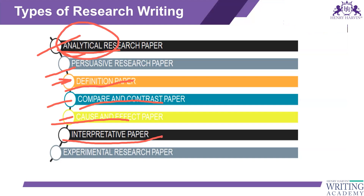Then we have the interpretative paper, also called the qualitative paper. In this, you have a situation already going on — like people's behavior — and you try to understand where it is coming from. For example, in India there are so many stereotypes.